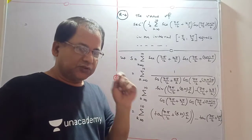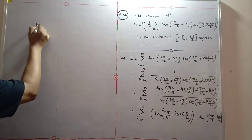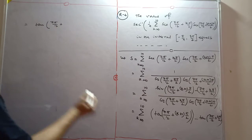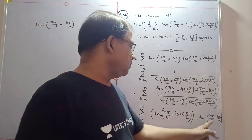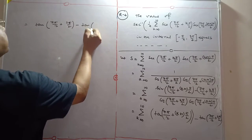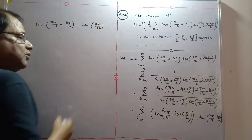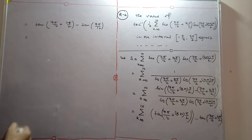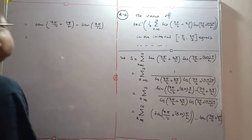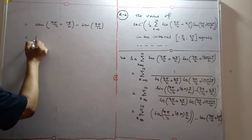Now to evaluate the summation, take the greatest value (k=10) and the smallest value (k=0). When k=10, the argument becomes 7π/12 + 11π/2. When k=0, the argument is just 7π/12.